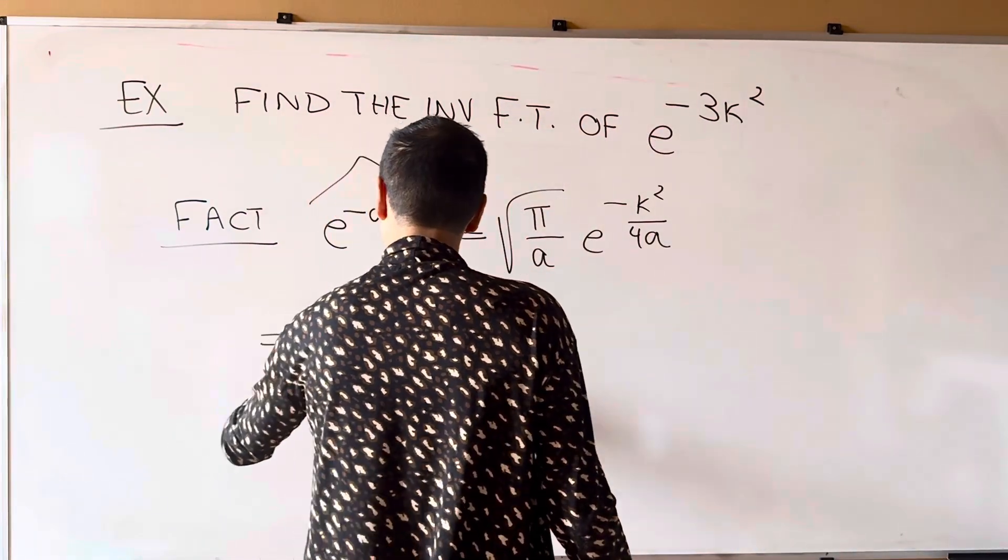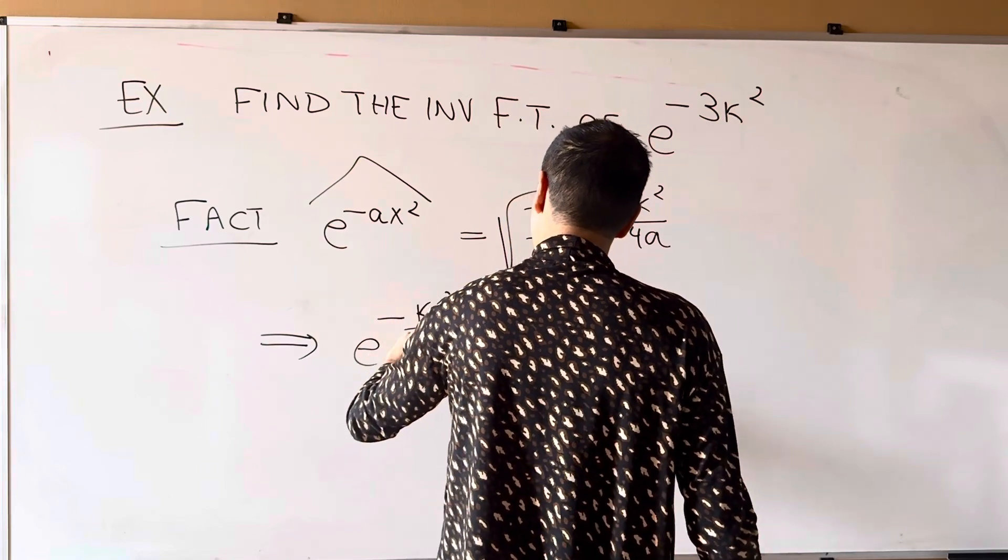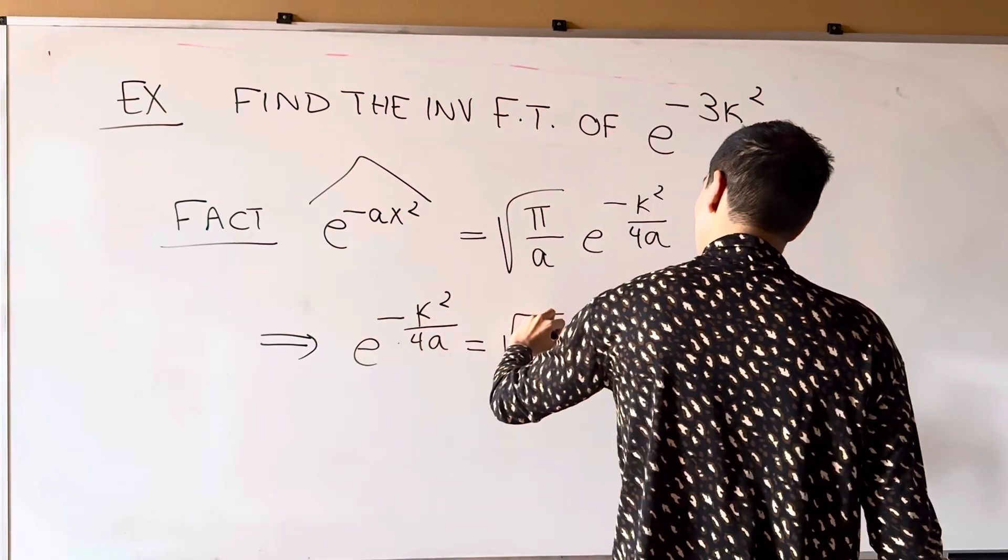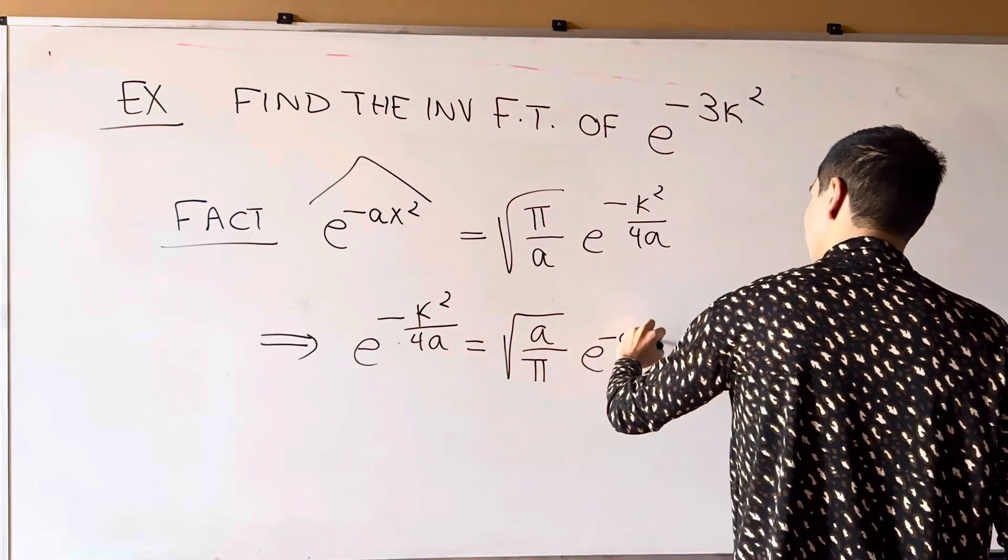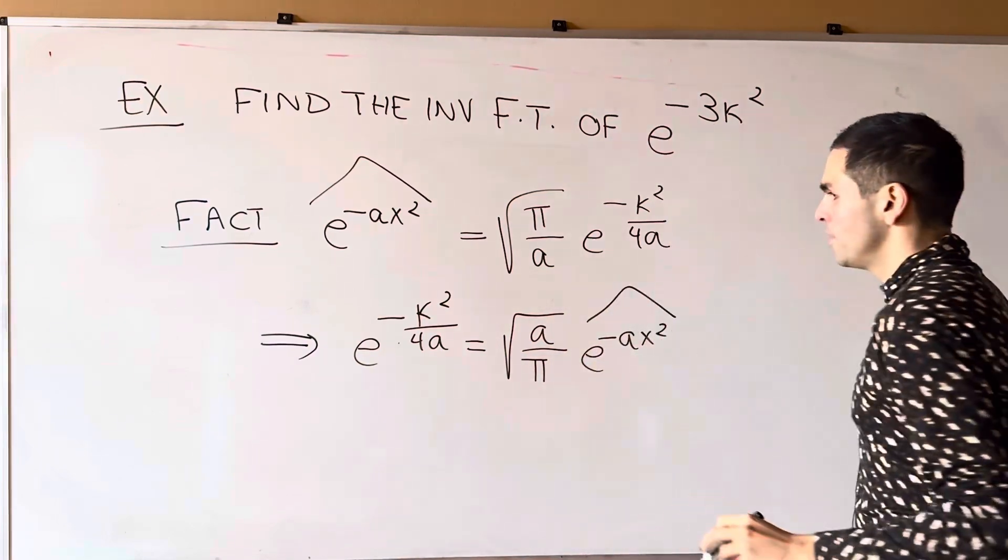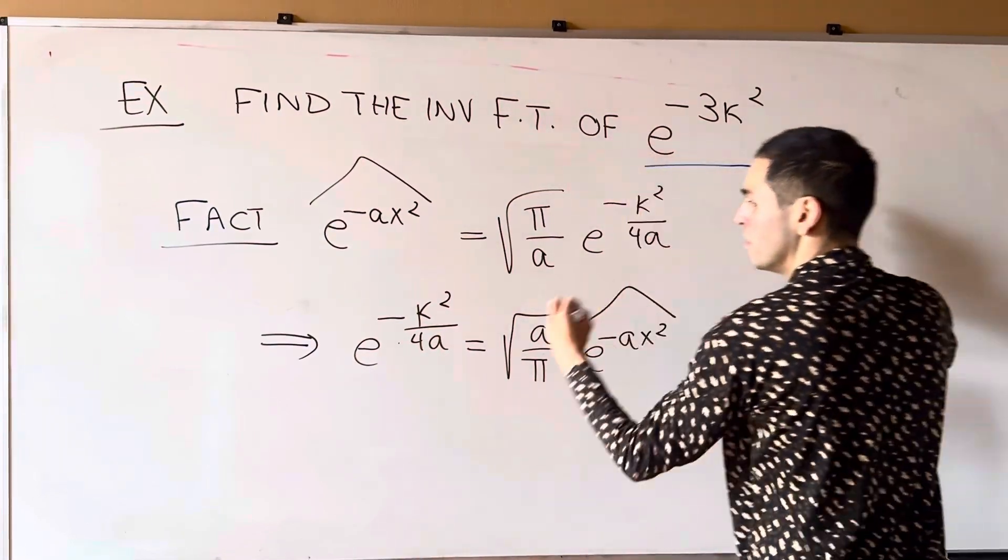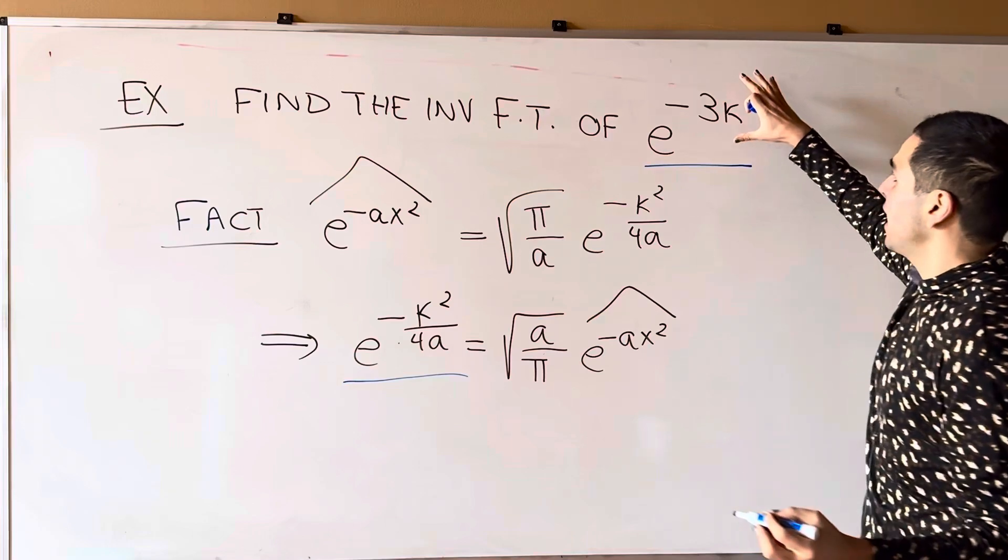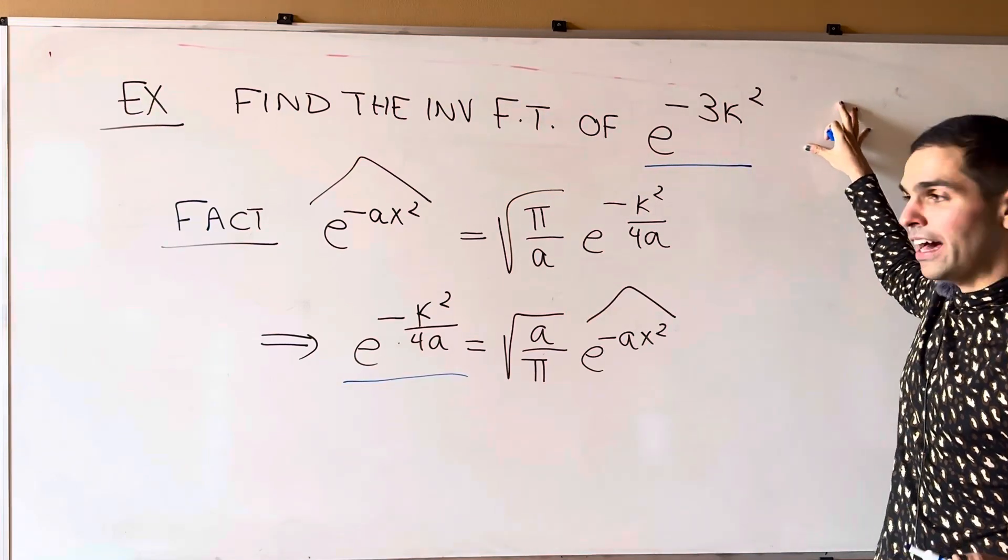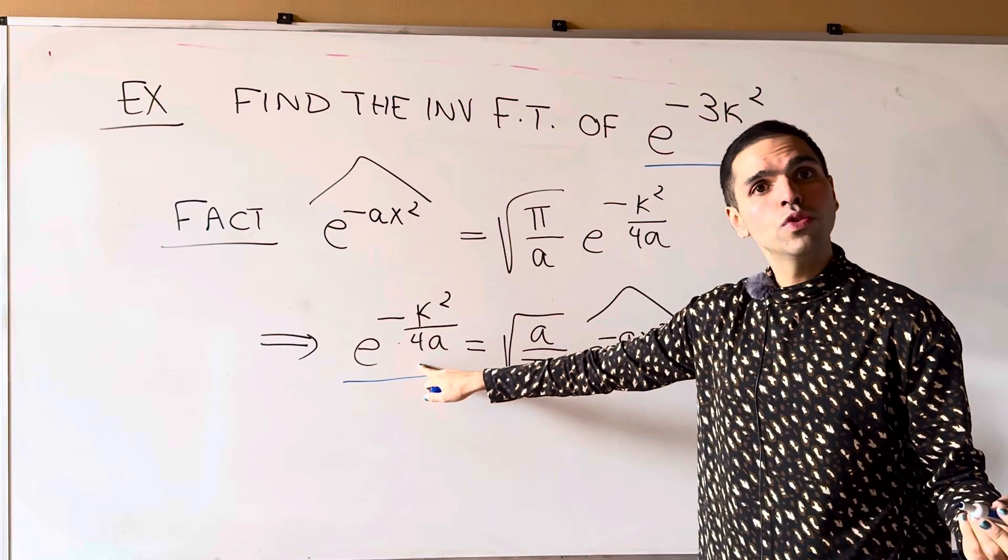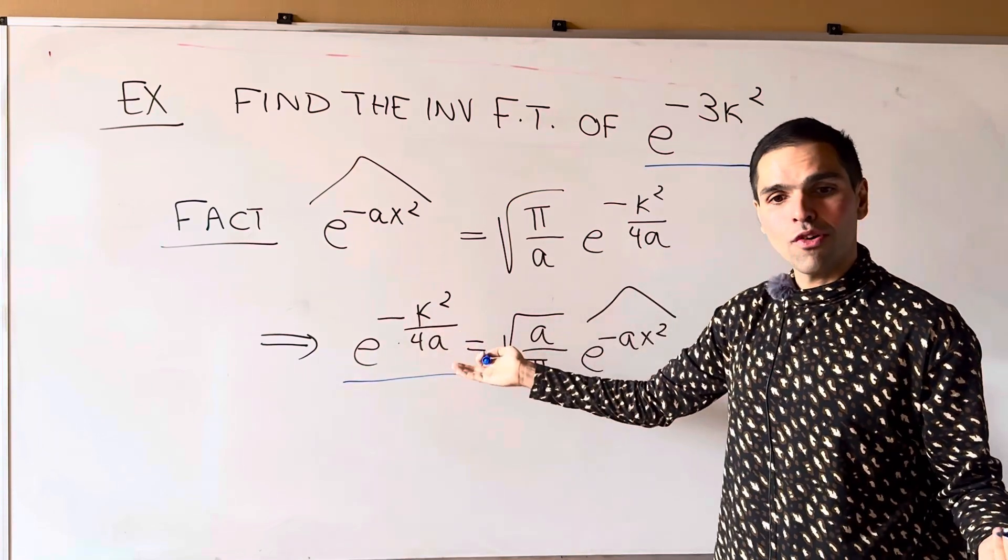So, e to the minus kappa squared over 4a is square root of a over pi times e to the minus a x squared hat. And notice, those are very similar. Right? Because the idea is we want to write e to the minus 3 kappa squared as a hat, but we know how to do this, e to the minus kappa squared over 4a.